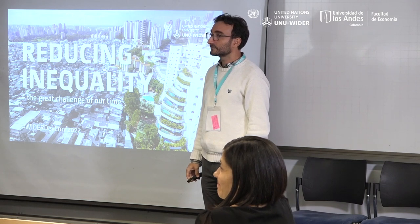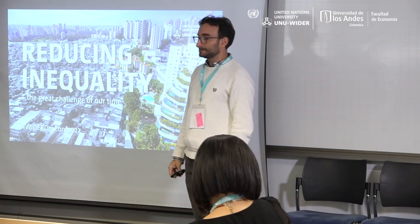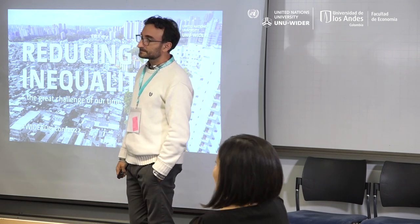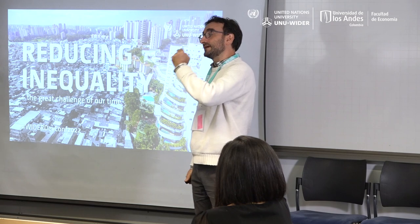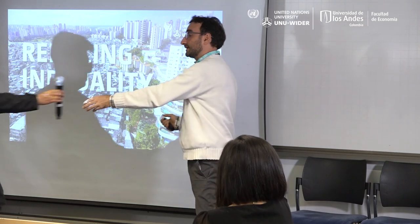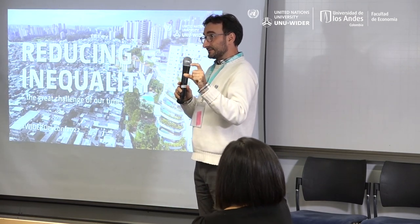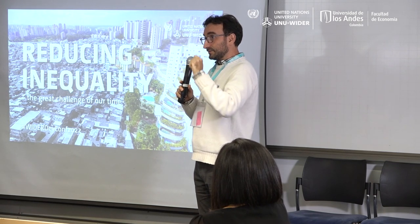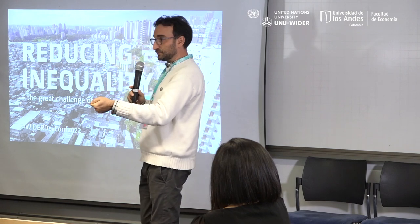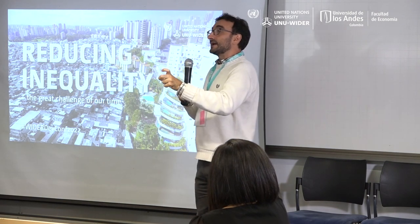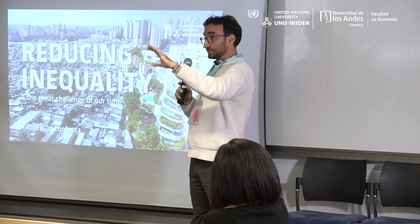I'm just curious about some heterogeneity issues. How do the results vary by gender and race or family income? Do you have any evidence? Yes. So we don't have family income, but we have race and gender. We don't find differences in the main variable - the propensity to redistribute - by race. Meaning that the results are the same across groups.